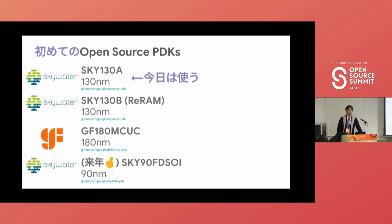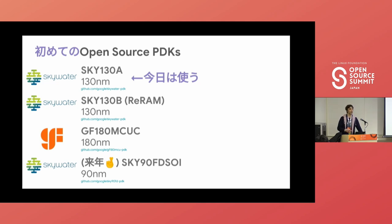More recently, we also partnered with a new foundry called GlobalFoundries and convinced them similarly to open source their 180 nanometer PDK, which is available on GitHub freely for anybody under the Apache 2 license. We also partnered further with SkyWater Technology for them to open source their 19 nanometer PDK next year.